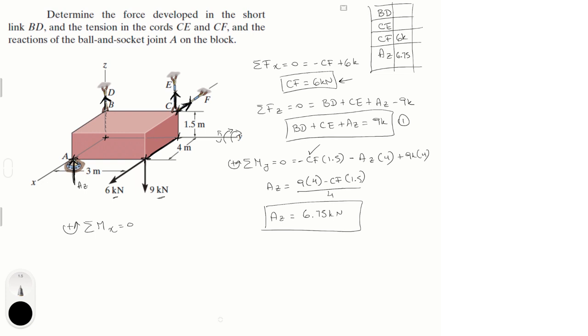The only ones creating a moment are the 9 kN force and CE. So sum of the moments on the X is equal to zero and it's equal to the 9 kN force times 3 because that's the distance between where the 9 kN force is applied and the X axis. And it is negative because it's trying to turn it clockwise.